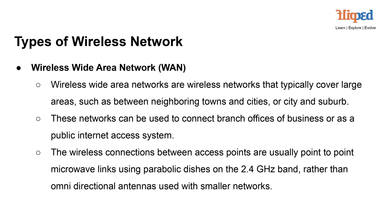Wireless WANs use various technologies for establishing connections between access points that cover the wide area. The wireless connections in a WAN are typically point-to-point microwave links, often employing parabolic dishes for highly directional communication. Point-to-point microwave links involve establishing direct links between two specific access points without the need for intermediary devices, and they operate over the microwave frequency range, including the 2.4 GHz band commonly used for such long-distance wireless communications.